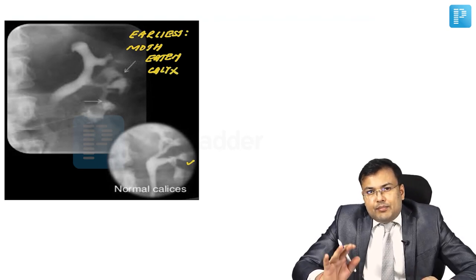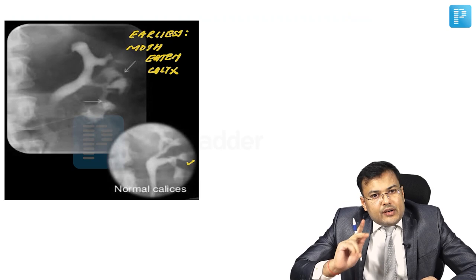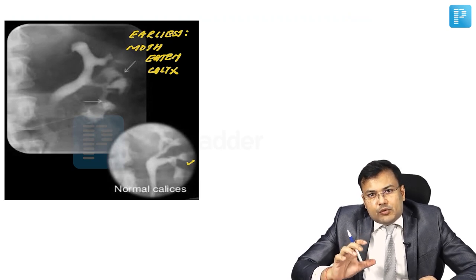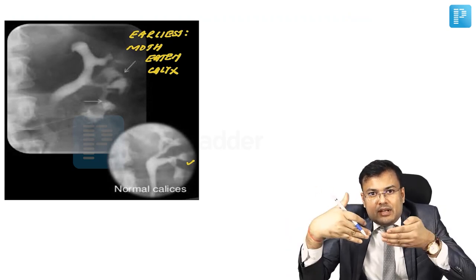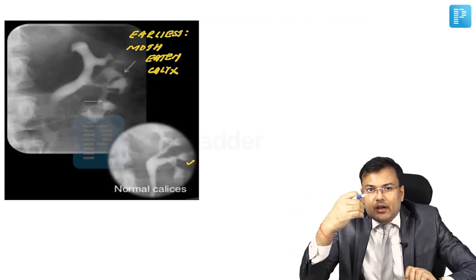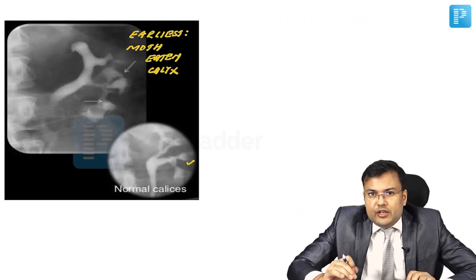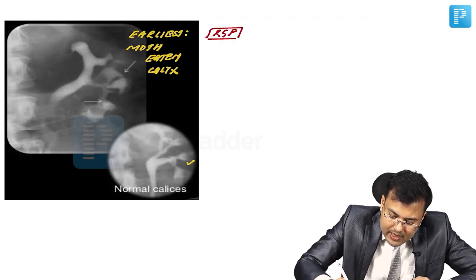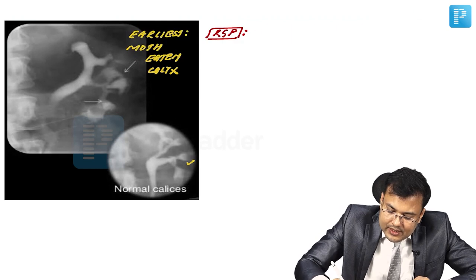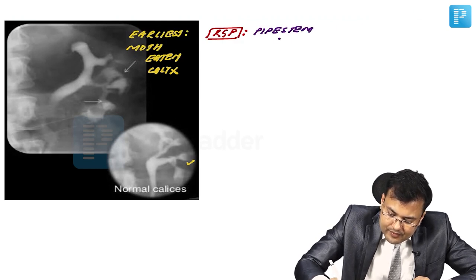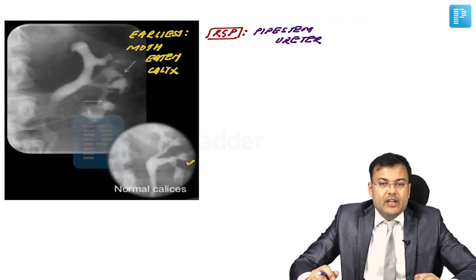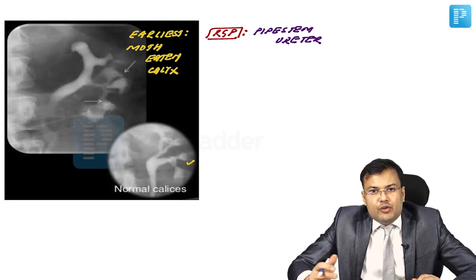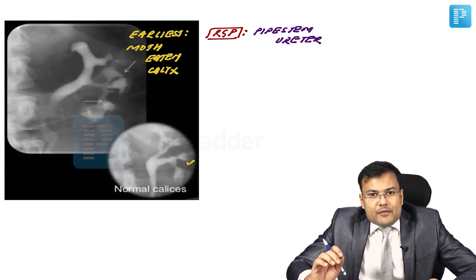Pipe stem ureter, also discussed in retroperitoneal fibrosis (where fibrosis causes medial deviation), is also seen in tuberculosis. On retrograde pyelogram (RGP), pipe stem ureter is demonstrated. After diagnosis, management includes anti-tubercular therapy (ATT) along with management of complications.